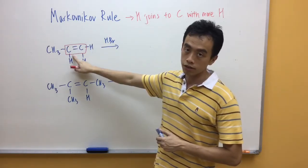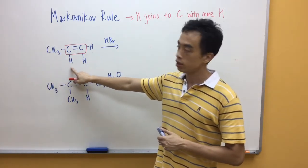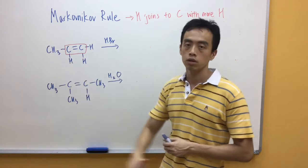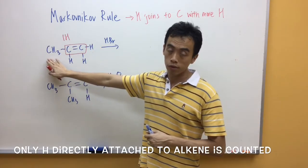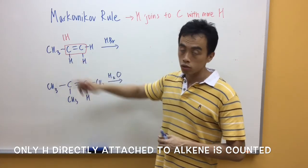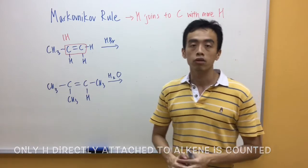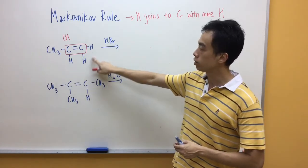Now you notice the carbon on the left hand side is attached to a CH3, it's attached to one hydrogen, so this carbon has one hydrogen. Now take note this three hydrogen belongs to the CH3 carbon, doesn't belong to this alkene carbon, so it's not counted towards the number of hydrogen. Now this carbon on the right hand side is attached to one hydrogen, two hydrogen.